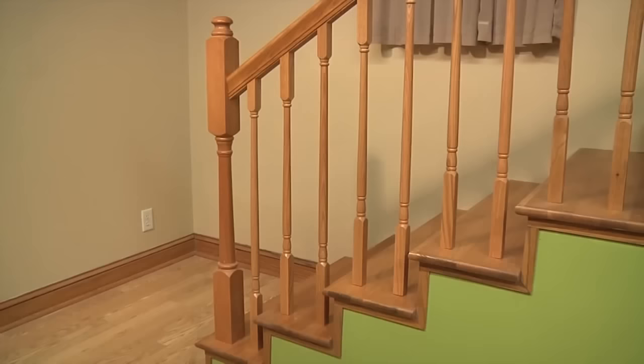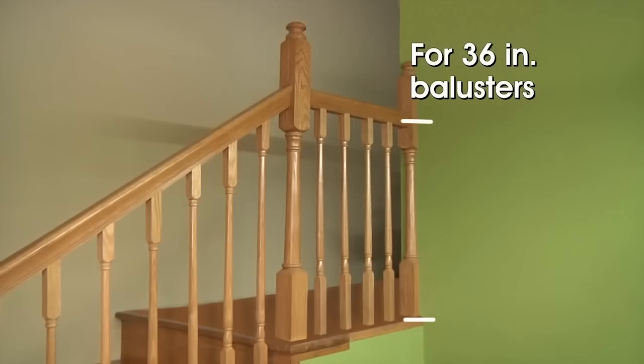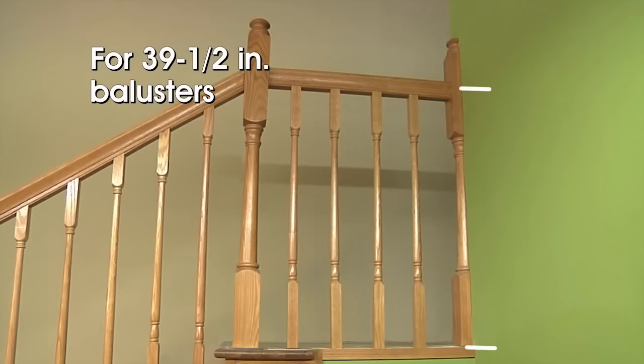The height of the handrail depends on the height of the balusters. For 36 inch balusters, the center of the handrail should be positioned 35 and a half inches above the floor. For 39 and a half inch balusters, the center of the handrail should be at 39 inches.